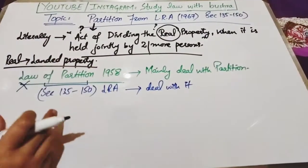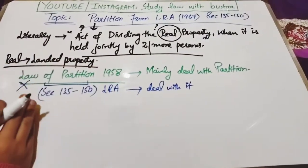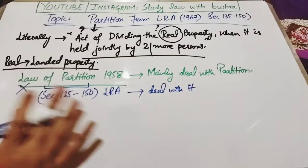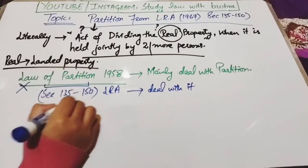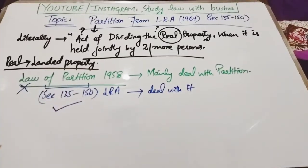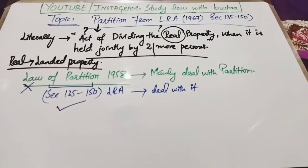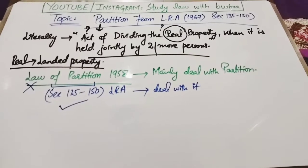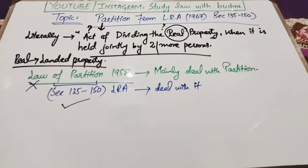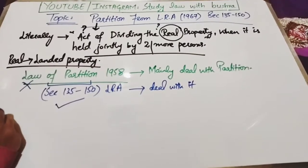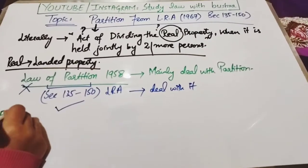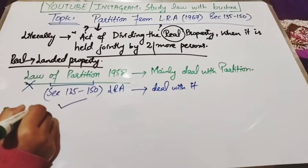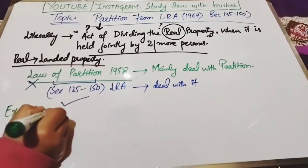ہر وہ زمین جو jointly اور commonly دو یا دو سے زیادہ افراد کے پاس ہو اسے divide کیا جا سکتا ہے — یہ general rule ہے۔ لیکن ہمارے پاس کچھ exceptions ہیں اس general rule of partition کی۔